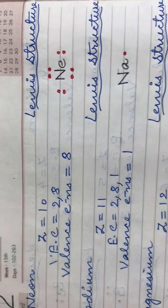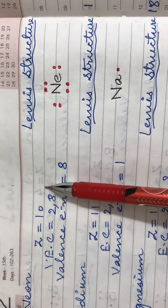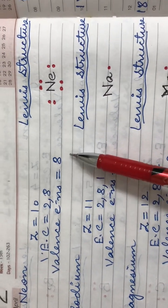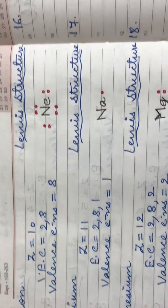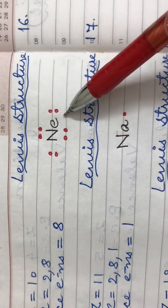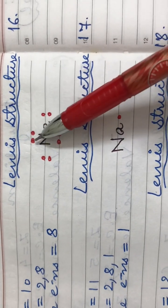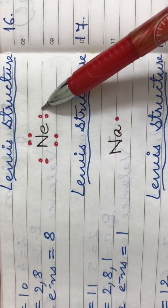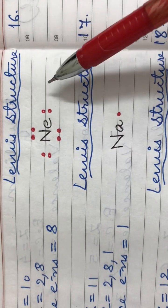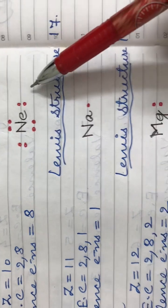Coming to the next element, neon. Neon has an atomic number of ten. Its electronic configuration is 2,8 and it has eight valence electrons. The Lewis structure for neon is its symbol Ne with eight dots placed in pairs around it, representing all eight valence electrons.